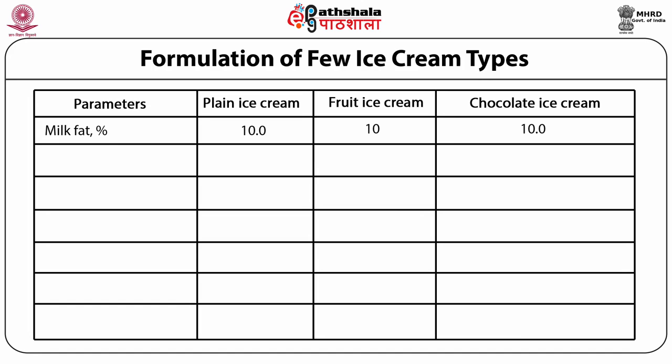Milk fat should be minimum 10% in all types as per the Food Safety and Standards Act. MSNF can be decreased slightly in fruit and chocolate ice cream since total solids are higher due to increased sugar and solids from fruit or cocoa. For plain ice cream, MSNF is kept around 12%; for fruit and chocolate ice cream it can be around 10.5%. Sucrose is 15% in plain ice cream; for fruit ice cream with acidic fruit and low pH, about 17% is needed; and for chocolate ice cream, slightly higher sugar is also needed to balance bitterness from cocoa.